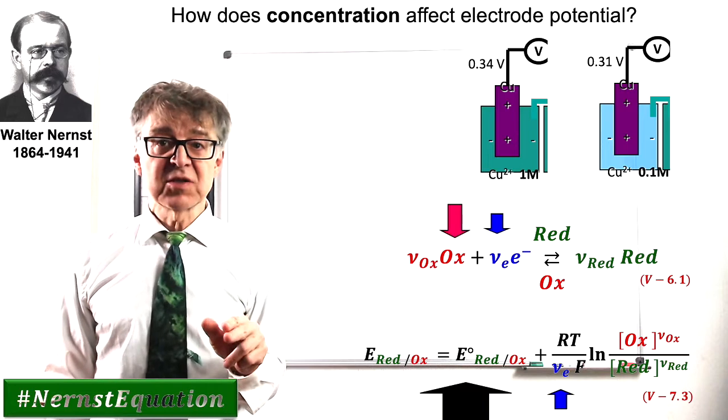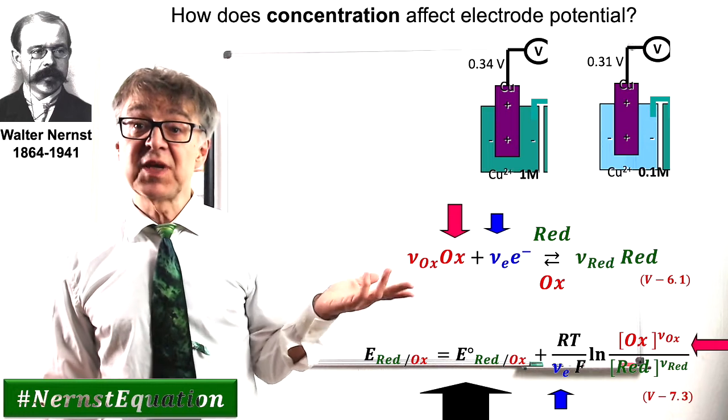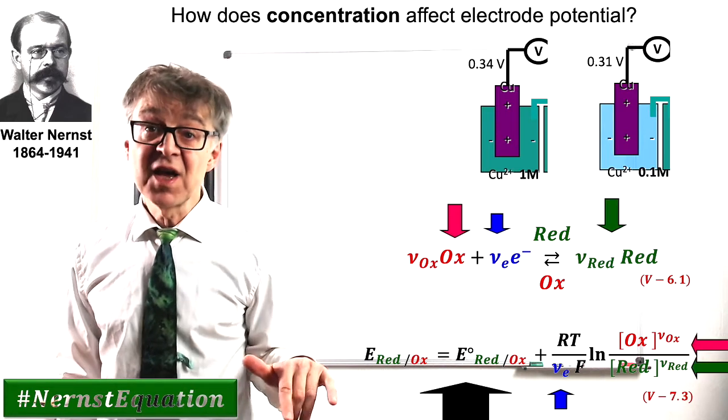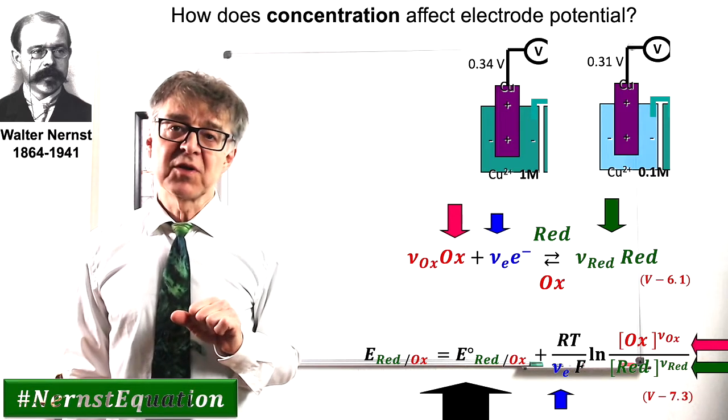The concentrations of all oxidized species can be found in the numerator and the concentration of all reduced species can be found in the denominator in the quotient in the argument of the logarithm.